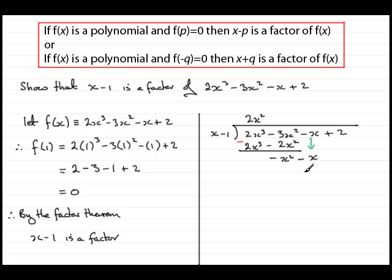Bring the next term down, which is minus x. And we start over again. What do you multiply the x by to give minus x squared? Well, that's going to be minus x. Now multiply minus x with x minus 1 and you have minus x times x is minus x squared. Minus x times the minus 1 there is plus x.